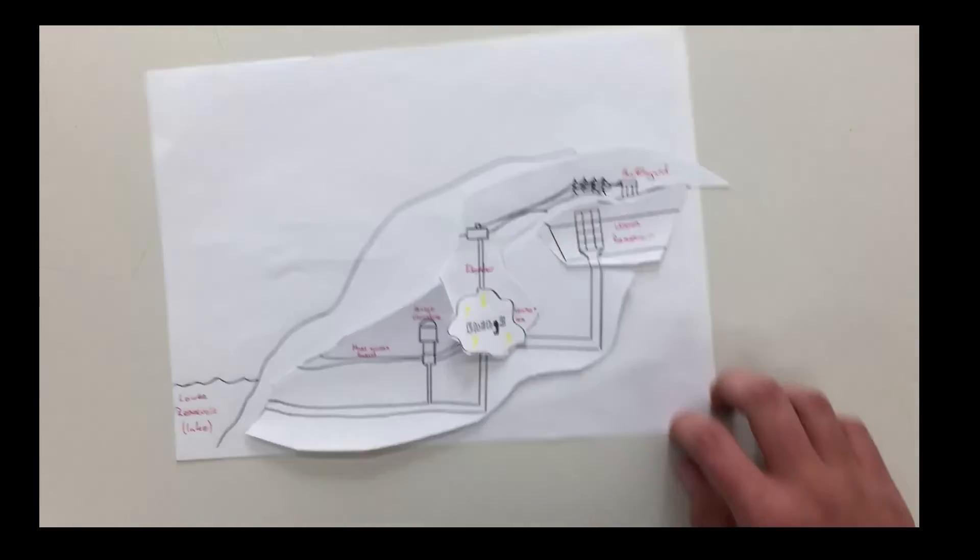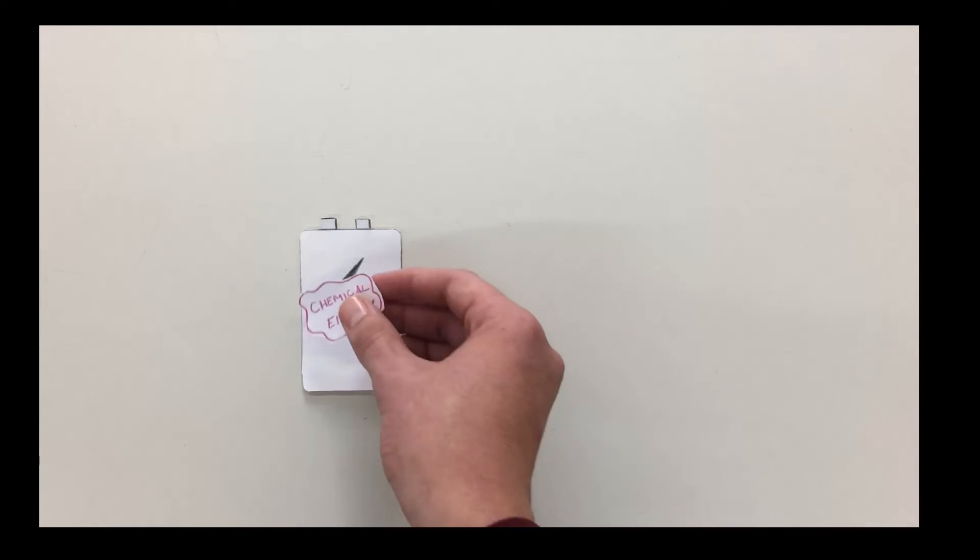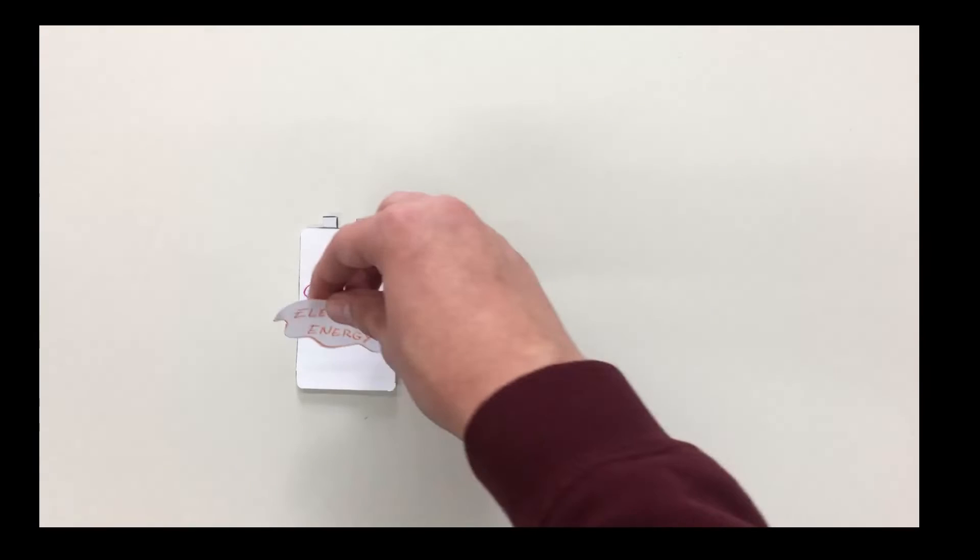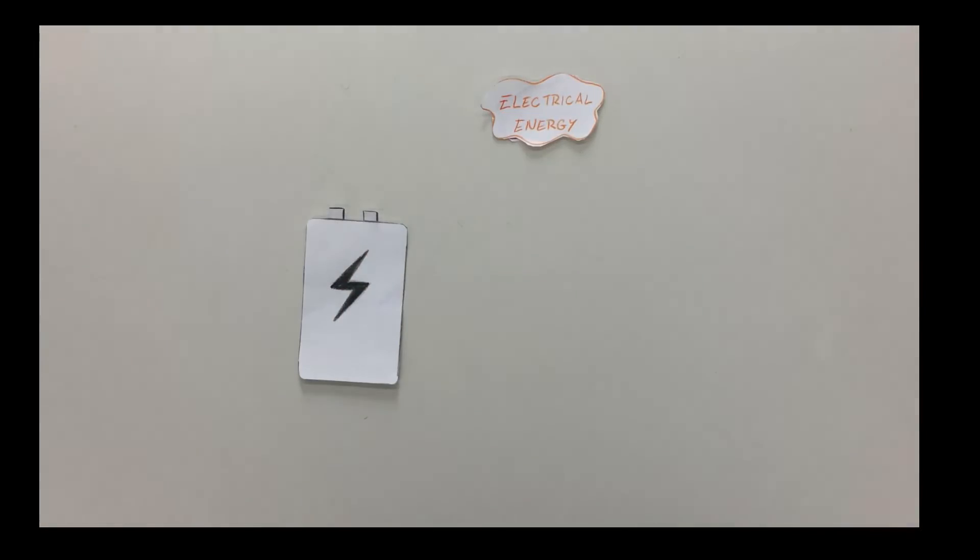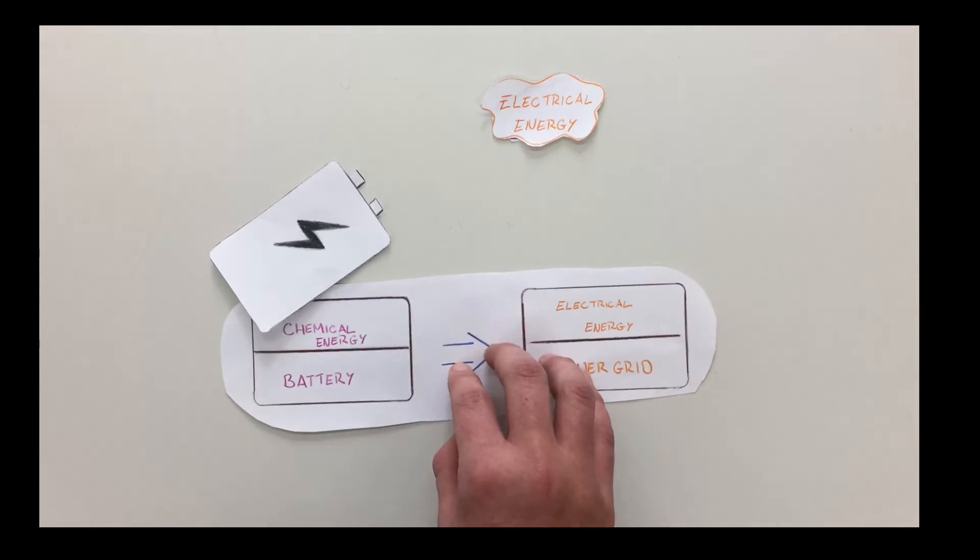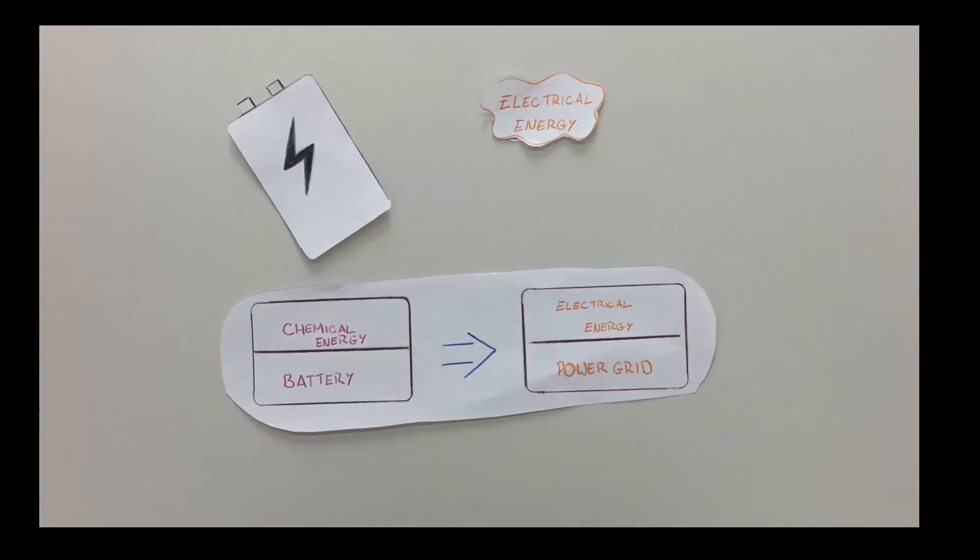Another form of energy storage is storing energy in batteries. In this process, electrical energy is converted into chemical energy. For example, if too much energy is drawn from the power grid, it is held in large energy stores. And later, when the energy is needed again, the chemical energy is converted back into electrical energy and fed into the power grid.